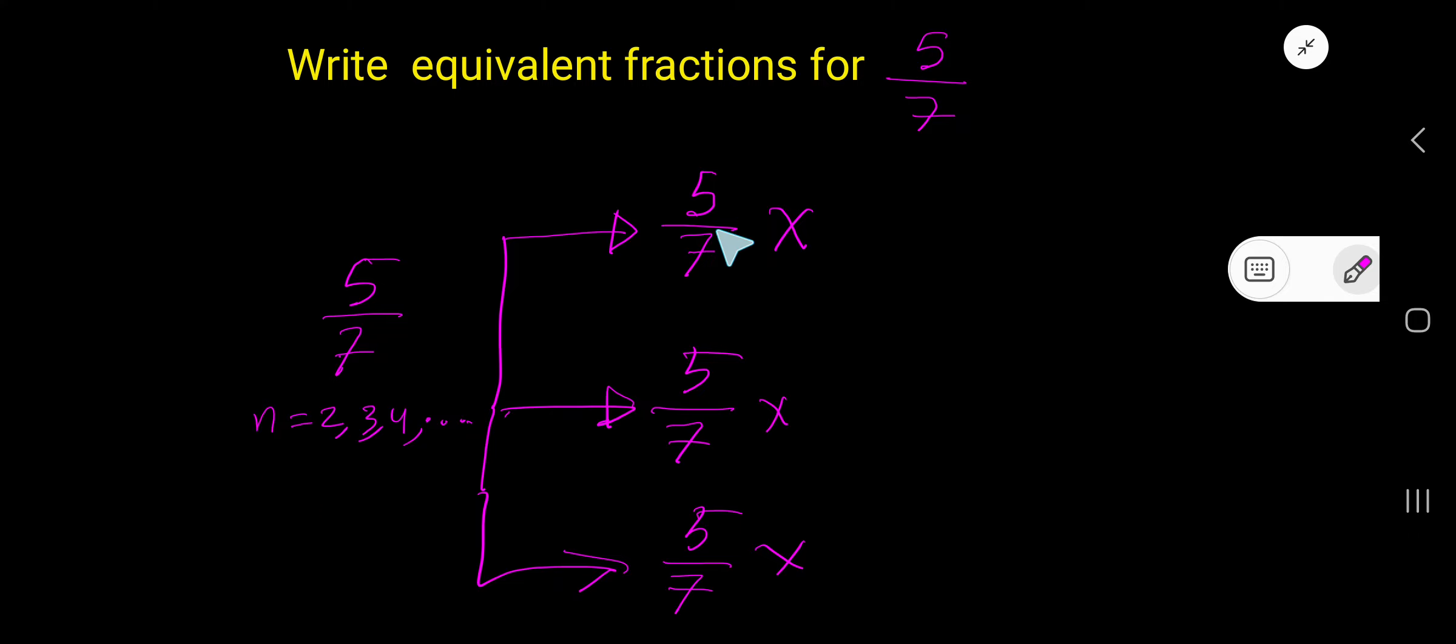Let me show you the equivalent fraction of 5 over 7. Just multiply numerator and denominator by 2, you are getting 10 over 14.